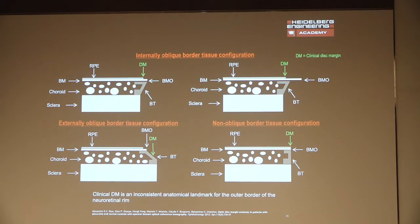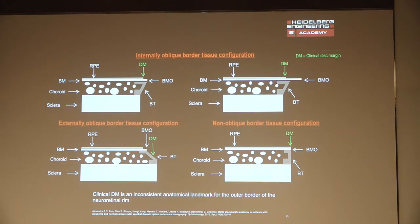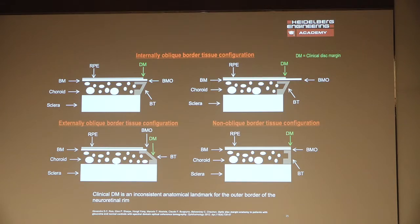Something about the configuration of the border tissue: the border tissue of Elsnic is a fibrous tissue connecting the scleral lip's inner scleral margin to the Bruch's membrane opening, and it can have different configurations. In a non-oblique border, they correspond to each other, so whatever we see clinically is the actual one. In an internal oblique configuration, the border tissue is placed internally relative to the scleral lip. In an external oblique configuration, the border tissue extends inside of the Bruch's membrane opening. What we see as the clinical disc margin is made of the scleral lip as well as the border tissue of Elsnic.